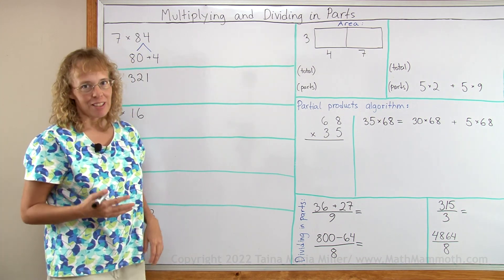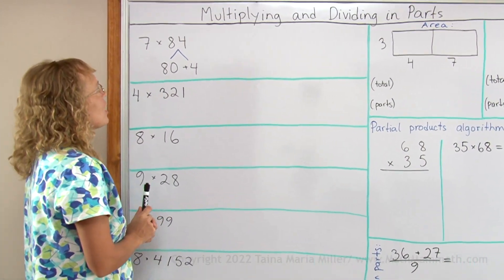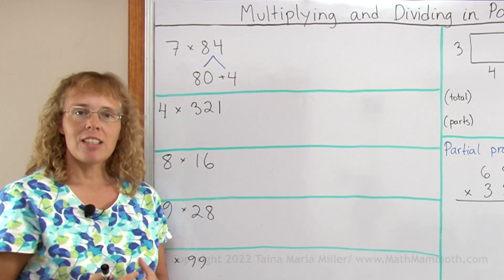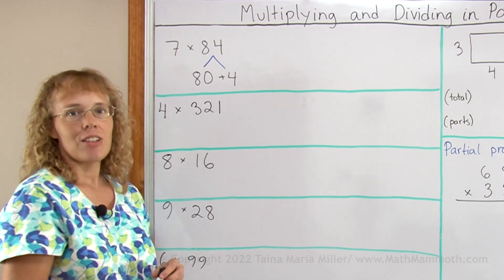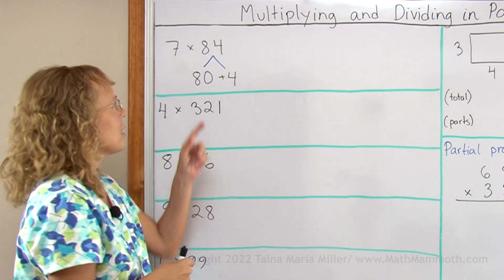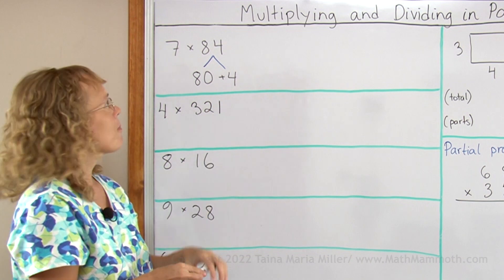You're probably already familiar with this process, but just in case you are not, if we have a multiplication 7 times 84, I can multiply it mentally if I break 84 into two parts, 80 and 4.